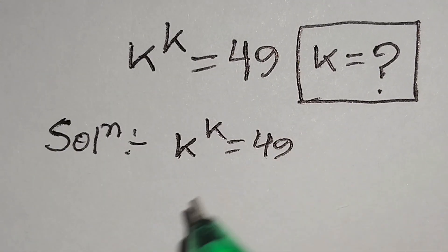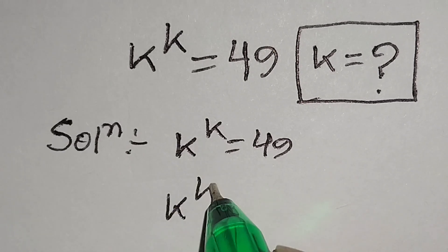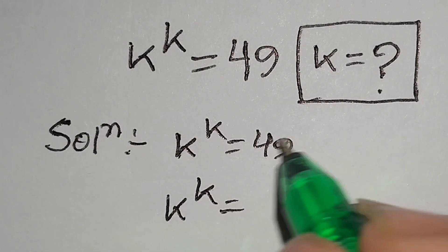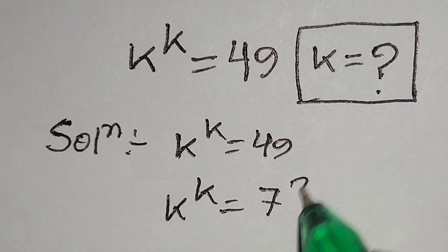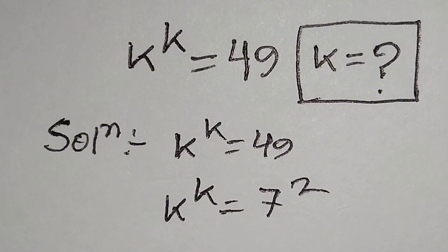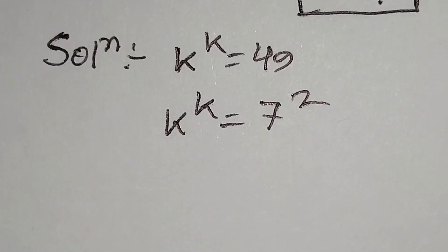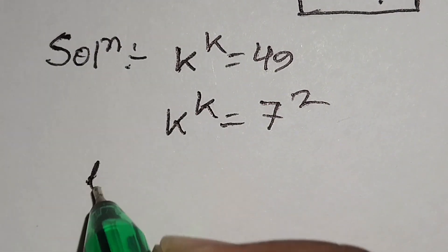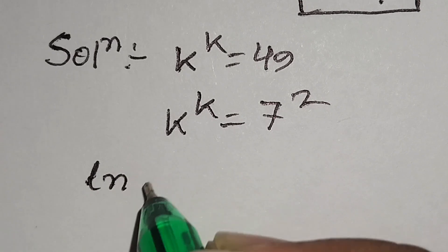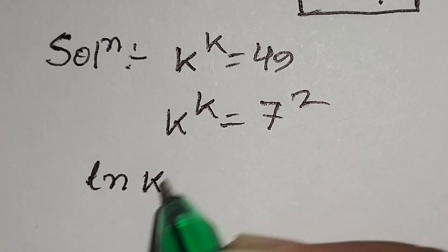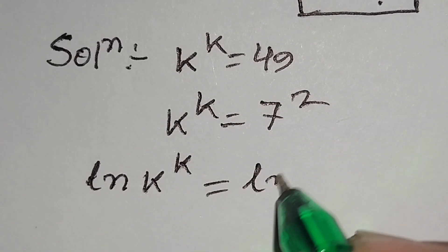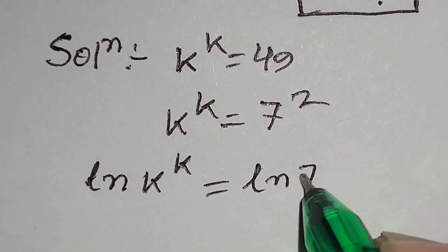We can write 49 as 7 squared. Now we will take ln on both sides, so we can write: ln of k to the power k is equal to ln of 7 squared.